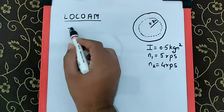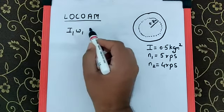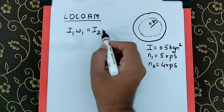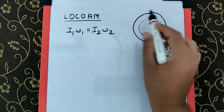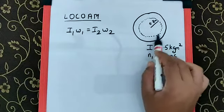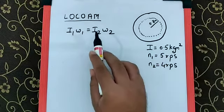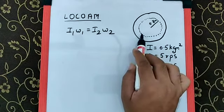Which is nothing but I1 omega 1 is equal to I2 omega 2. So, I1 is the moment of inertia of this disk without the presence of the sand, I2 is the moment of inertia of the disk along with sand.